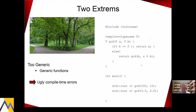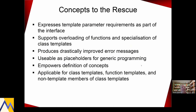So two extremes, both are from my perspective not so good. And now we have the cure, which is called — you can guess it — concepts. Now you can express template parameter requirements as part of the interface. They support overloading of functions and specialization of class templates. In case something bad happens, they produce drastically improved error messages. Concepts will be unified with auto — we now speak of constrained and unconstrained placeholders. You can define your own concepts, and of course concepts are always applicable for class templates, function templates, or non-template members of class templates.